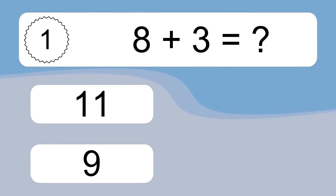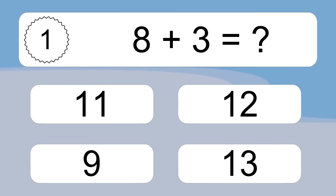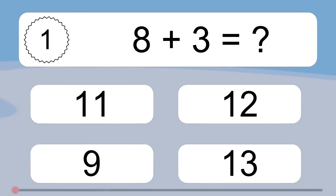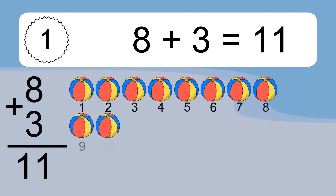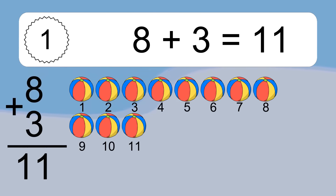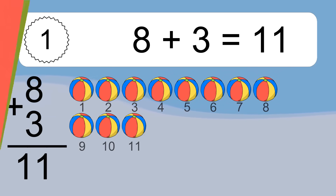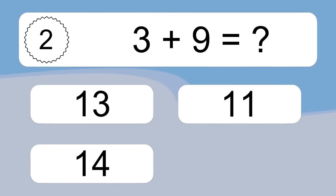8 plus 3 equals what? 8 plus 3 equals 11. Let's count it. 1, 2, 3, 4, 5, 6, 7, 8, 9, 10, 11.